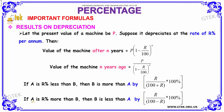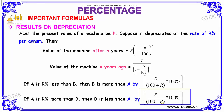If a is r percentage more than b, then b will be less than a by r by (100 minus r) into 100 percentage, where r is the rate that a is more than b.